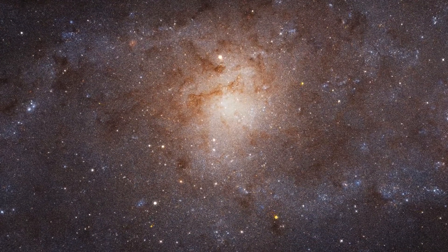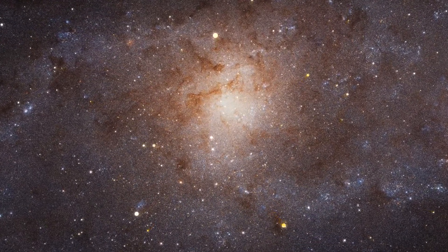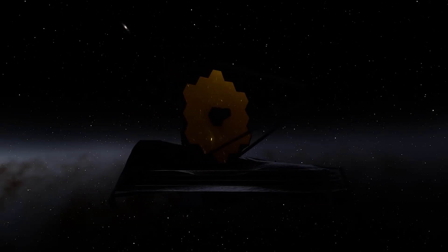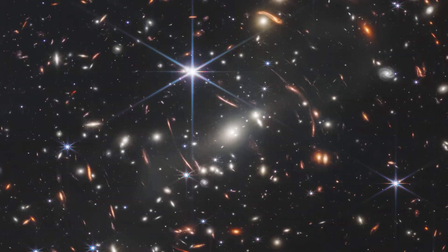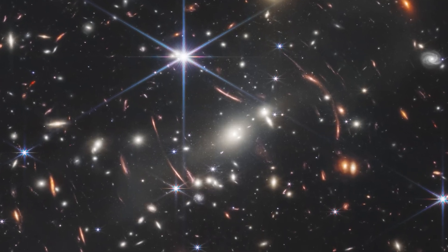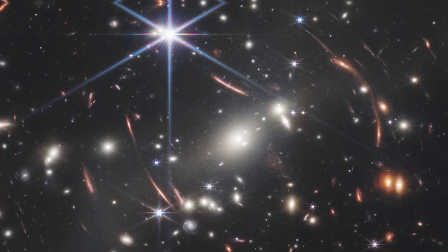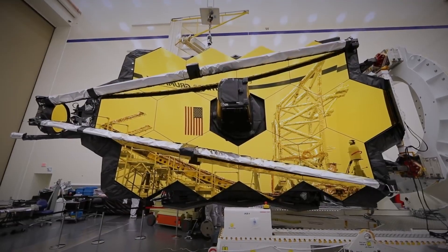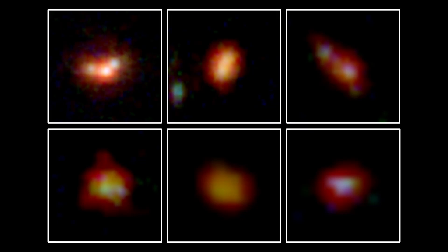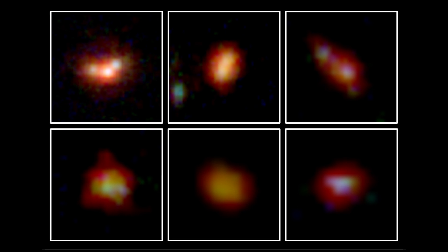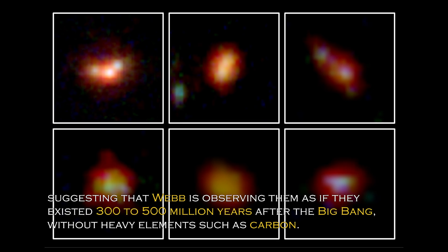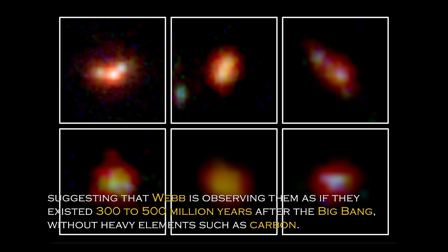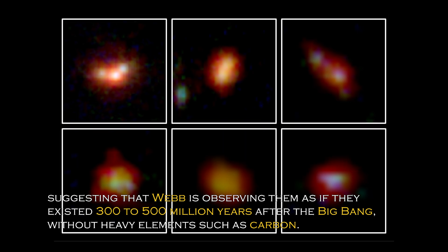Discovery has had a major impact on our understanding of the universe and has prompted NASA to develop even more powerful telescopes than the James Webb Space Telescope to confirm whether our understanding of the Big Bang is correct. Data obtained from Webb's spectrometer and near-infrared camera have revealed that four of the six primordial galaxies have extreme redshifts, suggesting that Webb is observing them as if they existed 300 to 500 million years after the Big Bang, without heavy elements such as carbon.